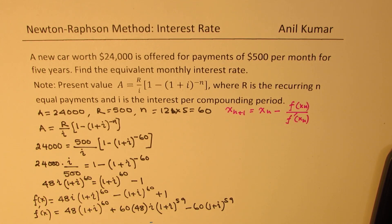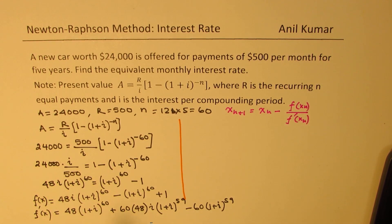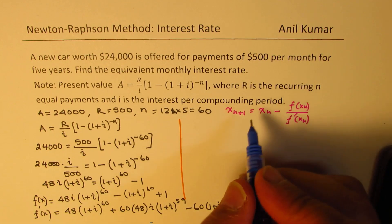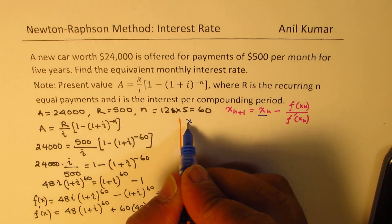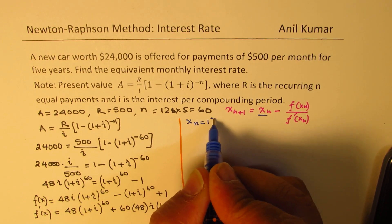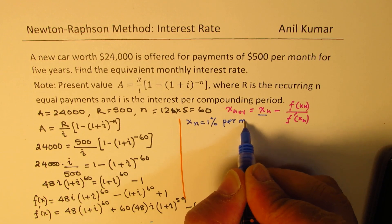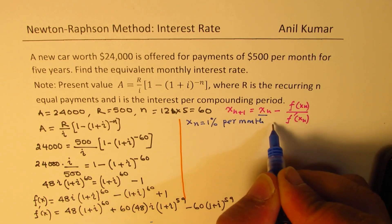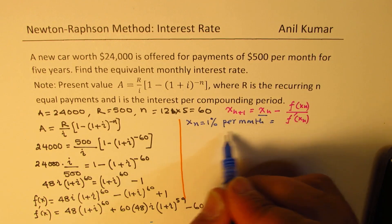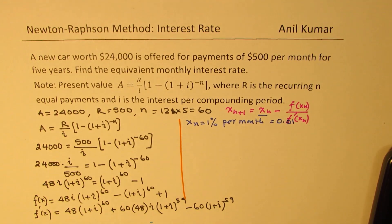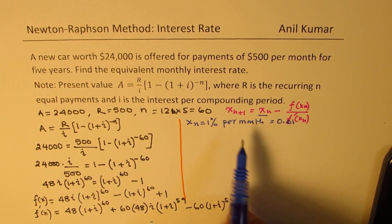Now we can apply the formula. We just need to decide the starting value. Let's assume x_n equals 1% per month as our starting value, which is 1 divided by 100, or 0.01.